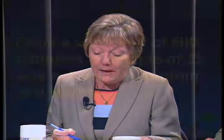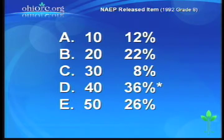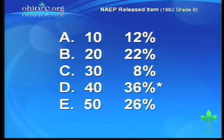Kay, we need to do another NAEP item — if your voice will hold out. This is for eighth graders: a shipment of 500 batteries, a sample of 25 were selected, and 2 batteries were found dead. How many dead batteries were expected in the entire shipment? What I think is difficult about this problem is students don't know how to begin — which numbers to compare in the ratio. You can set it up in two different ways that both work, and that makes it even more difficult.